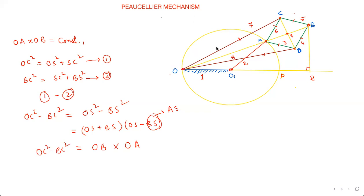Now what is OC²? What is OC actually? OC is a link length. Link length can never change, so OC is constant. And BC also is a constant - it is also a link length. Now if you do constant minus some constant, you will get equal to constant. So I proved, net, OA into OB is equal to constant.